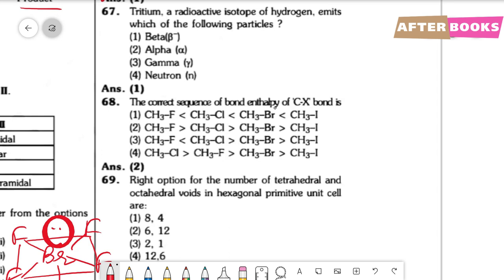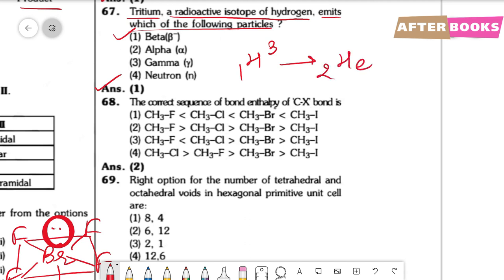Question number 67. Tritium is a radioactive isotope of hydrogen. It emits beta particles. The correct option is option 1.